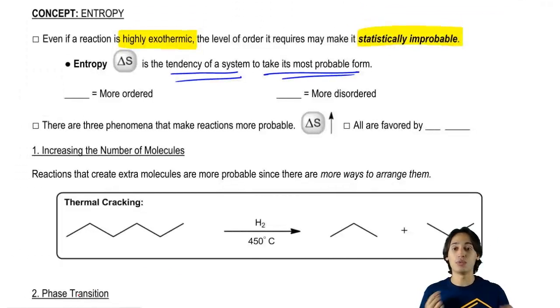So basically what we do with entropy is analyze whether this is going to be statistically more probable or statistically less probable. And that is what entropy is.